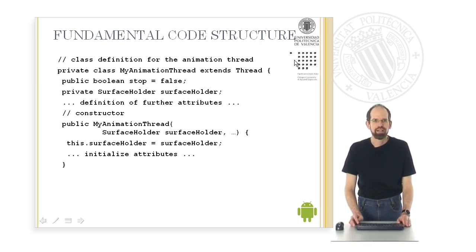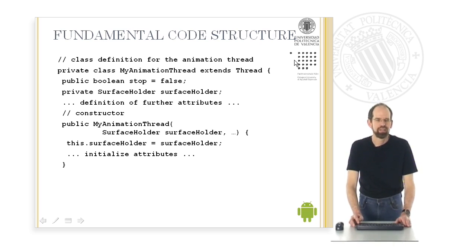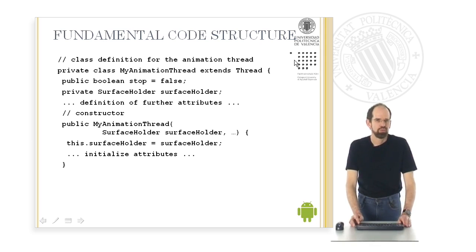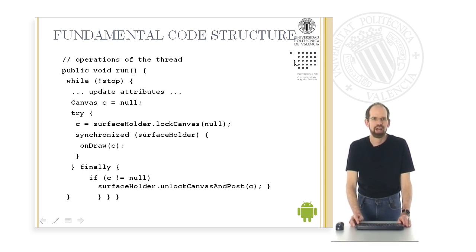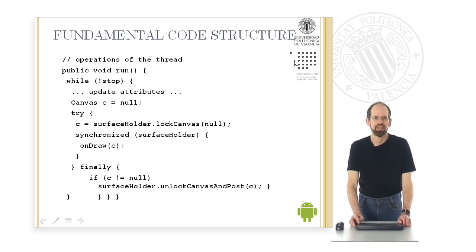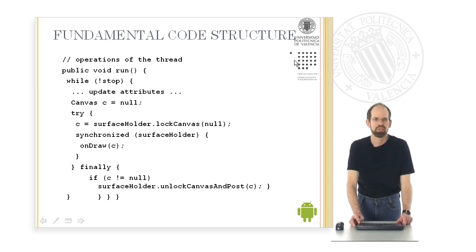The class defining the animation thread is defined as a subclass of Thread, which calculates the animation step by step. It has a constructor defining and initializing attribute values, and a run method executing the animation loop. In this animation loop we again and again perform three steps: lockCanvas, then onDraw with the canvas as a parameter, then unlockCanvasAndPost. By this sequence of steps we have the new calculation of the attribute values and the display of the graphical object on the screen.